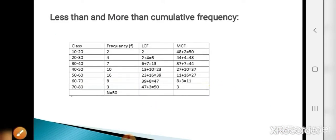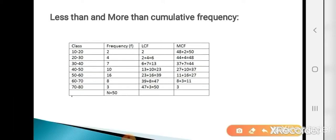Now the next point is less than and more than cumulative frequency. We have a frequency distribution with classes 10–20, 20–30, 30–40, 40–50, 50–60, 60–70, 70–80 and frequencies 2, 4, 7, 10, 16, 8, 3. Total frequency N = 50. To calculate LCF (less than cumulative frequency): take the first frequency as it is (2), then add successively — 2+4=6, 6+7=13, 13+10=23, 23+16=39, 39+8=47, 47+3=50.